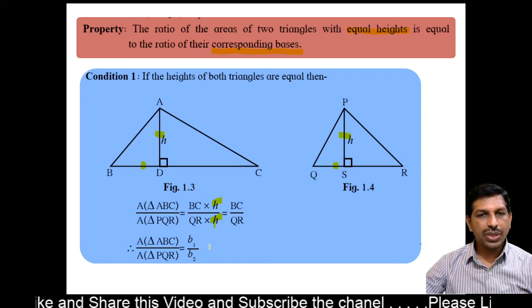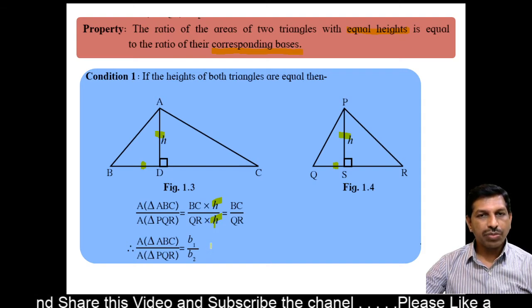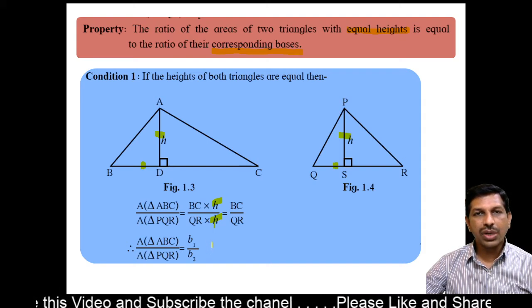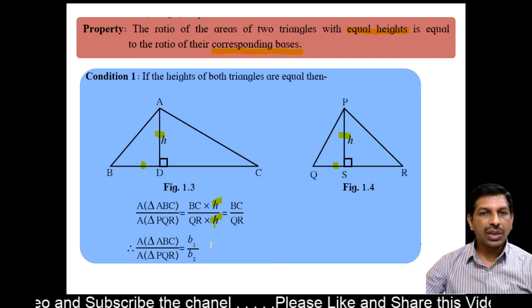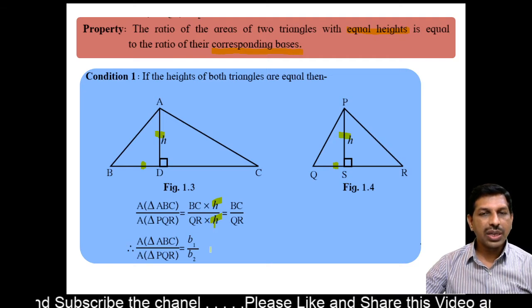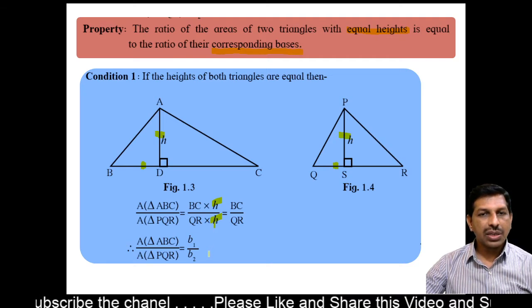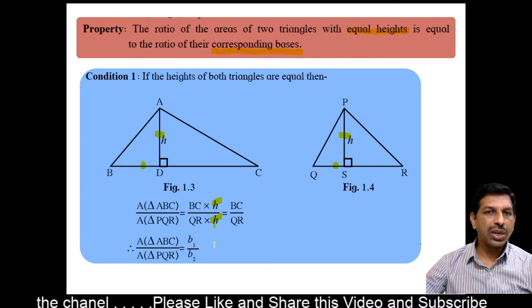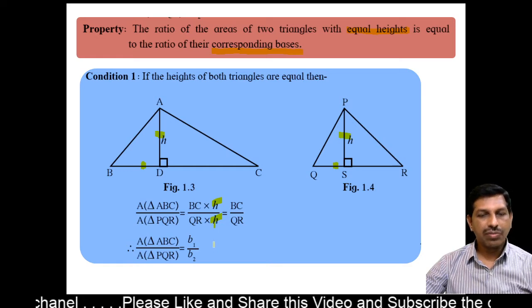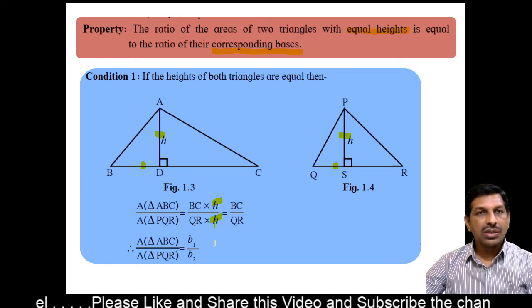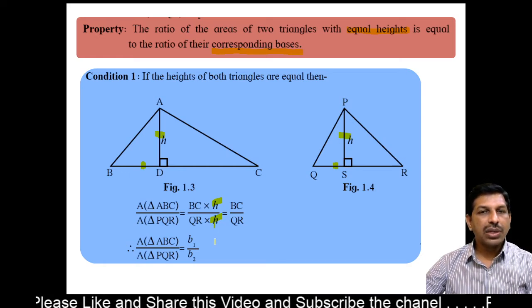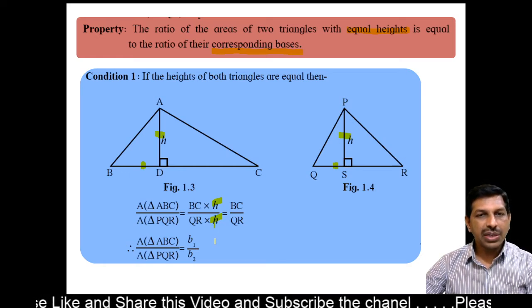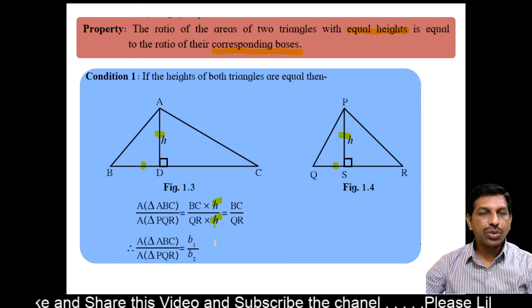This means: if the heights of the triangles are equal, then the ratio of their areas is equal to the ratio of their corresponding bases.